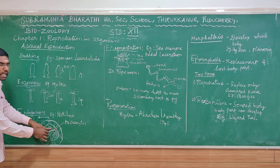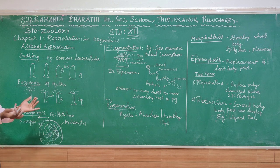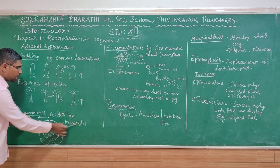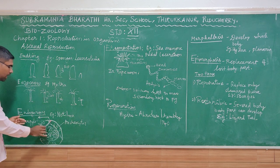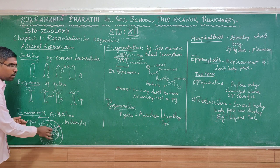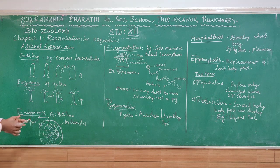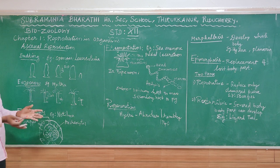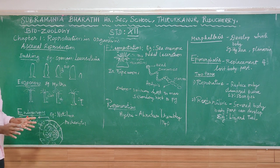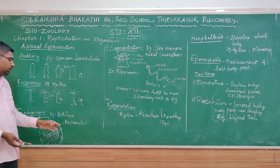The gemmule has an outer layer and an inner layer. The archaeocytes are facilitated within these layers. Under favorable conditions, the archaeocytes exit through the micropyle and develop into a new sponge organism.